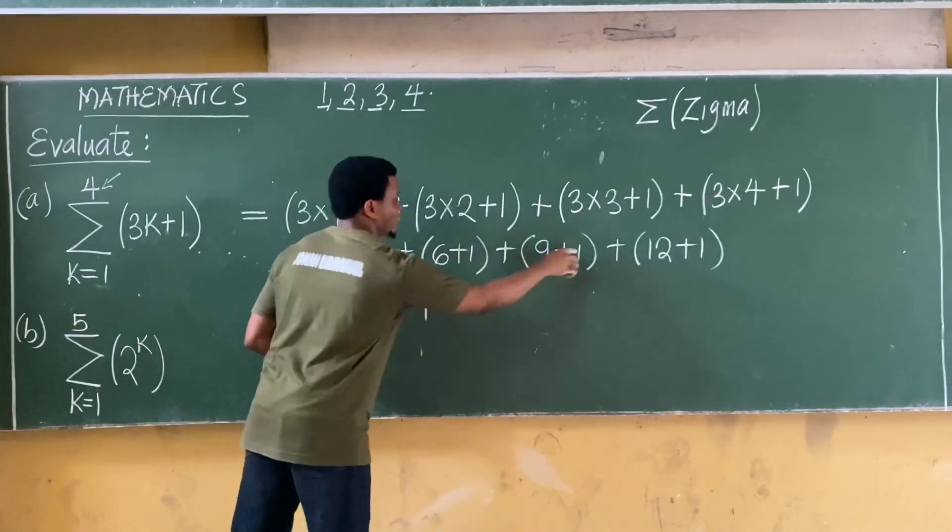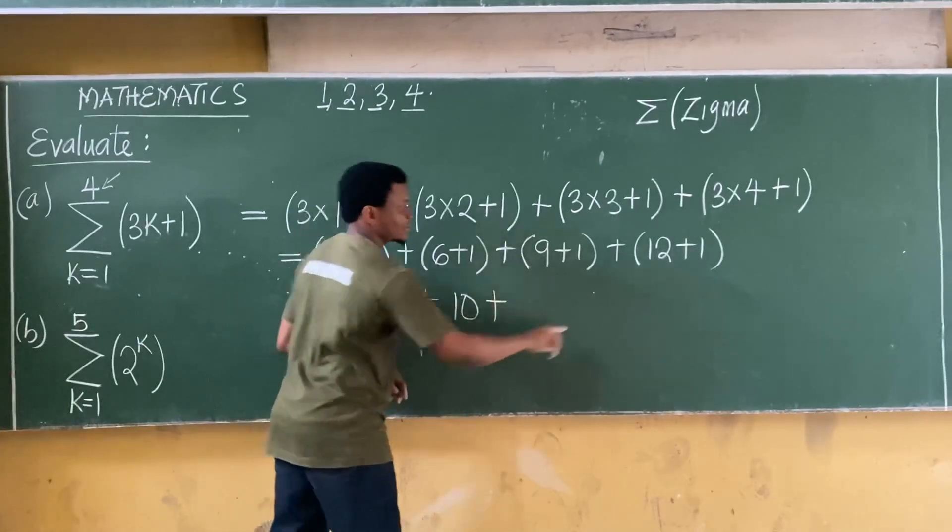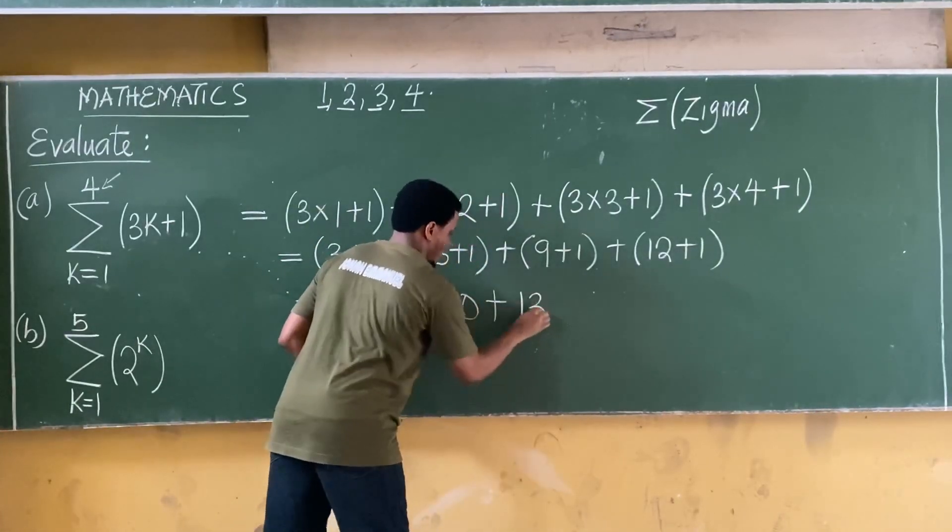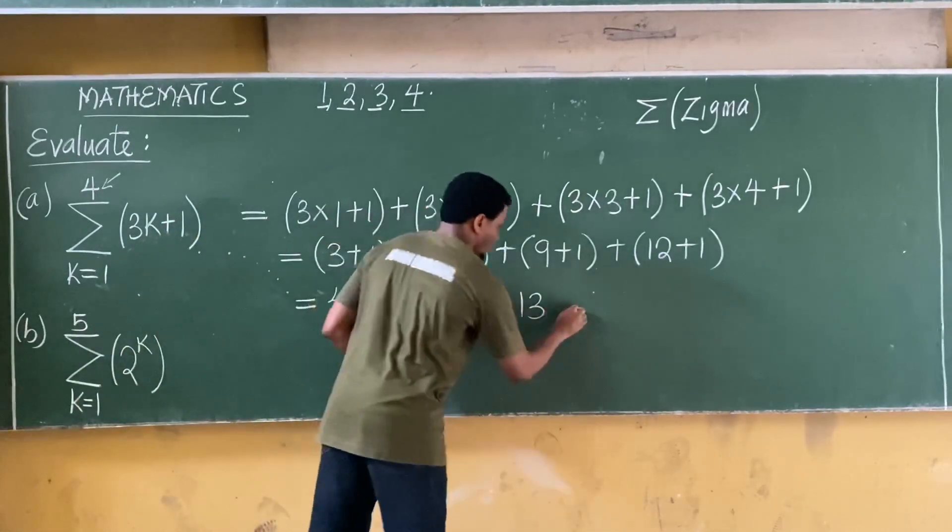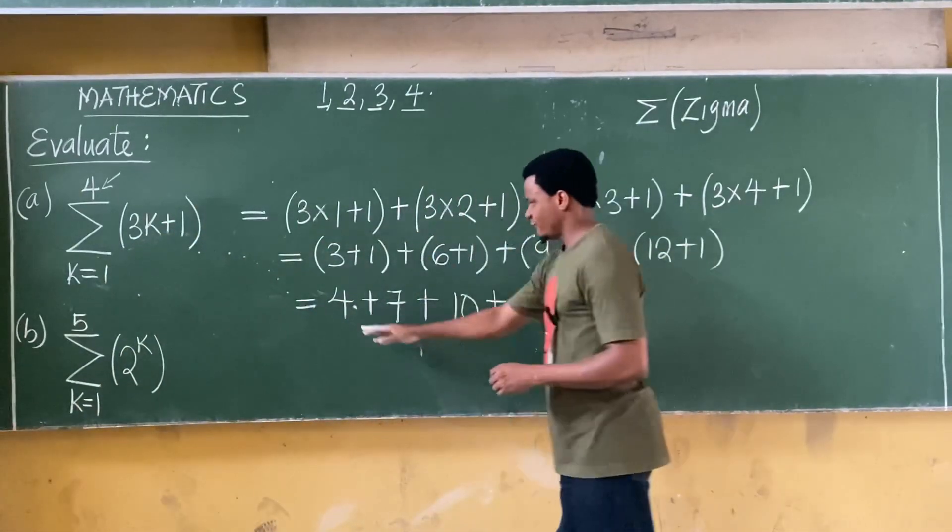Plus nine plus one is ten, plus twelve plus one is thirteen. Let's try to get this done. So if we try to get this done this will be equal to, I have this as being four plus seven which is eleven.